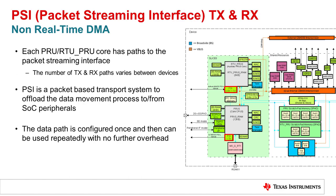The PRU ICSSG devices also have a Packet Streaming Interface, or PSI, to offload the data movement process to or from SoC-level peripherals. This accelerator serves as a non-real-time DMA, transferring data to and from the navigator subsystem within the SoC. Each PRU and RTU core has a path to the PSI accelerator, although the number of transmit and receive paths differs between the PRU and RTU cores as well as between devices. After the data path has been configured once, it can be used repeatedly with no further overhead.